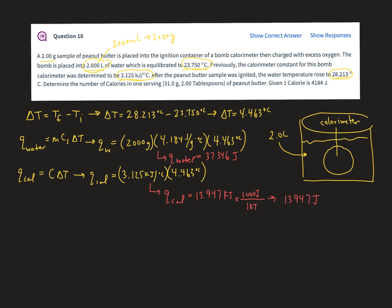So the Q for the calorimeter is 13,947 joules. So now I want to find the total. And so the total heat is going to be the heat from the water plus the heat from the calorimeter.